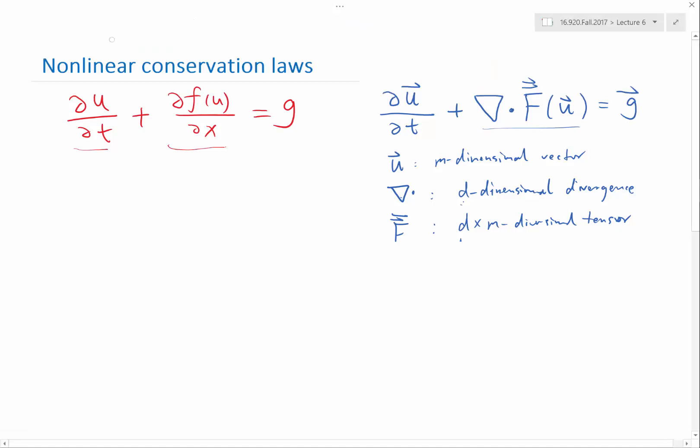So let's first discuss the simpler form first. The simpler form is just a special case of the general conservation law when m is equal to 1 and d is equal to 1. This is called a scalar conservation law because we are solving a scalar equation and also in one-dimensional scalar conservation law.